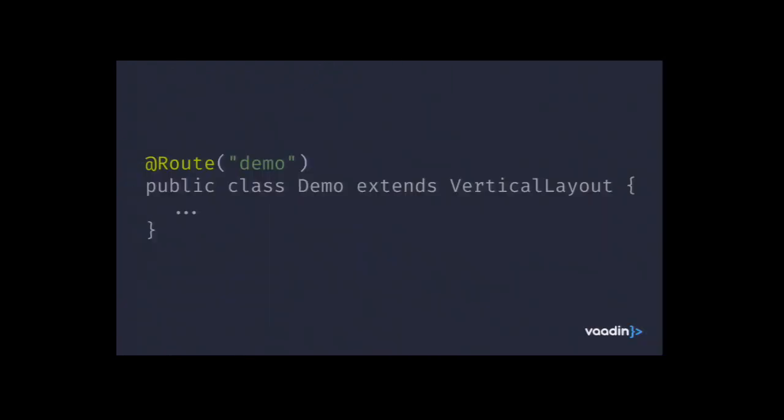Any component we make can be mapped to a URL in the browser by adding a route annotation on it. Typically you'd add a route annotation on a layout where you define the entire view. These can be nested and can have parameters that you can capture.